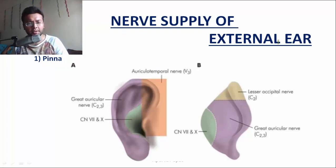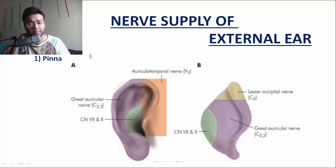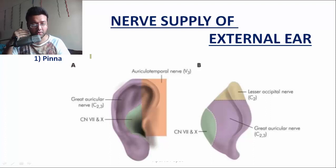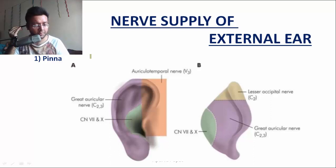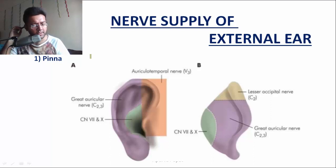Next is the nerve supply of the external ear. The pinna has two surfaces: the lateral surface and the medial surface. The upper one-third of the pinna is supplied by the auriculotemporal nerve, which comes from the mandibular division. That auriculotemporal nerve loops around the middle meningeal artery and supplies the upper third lateral surface of the pinna. The complementary part on the medial surface is supplied by the lesser occipital nerve.